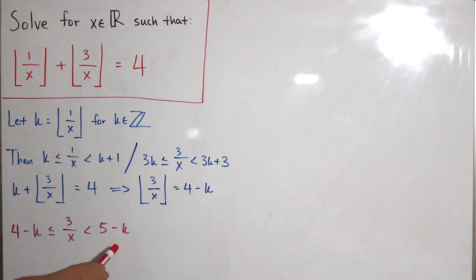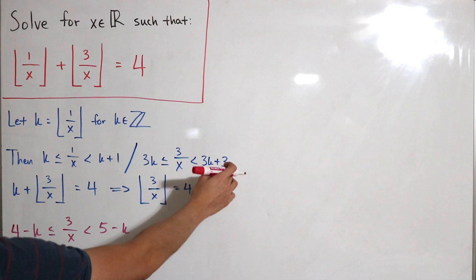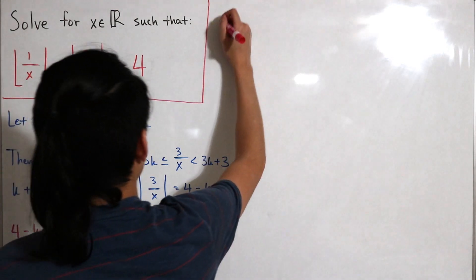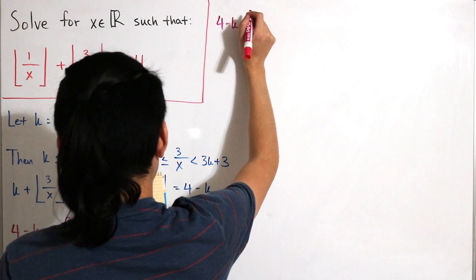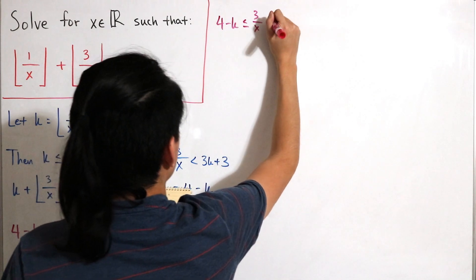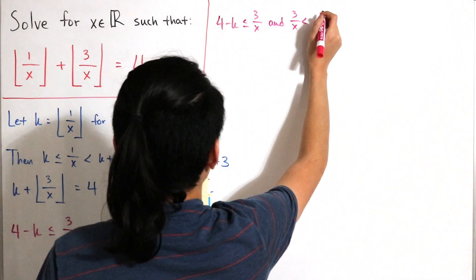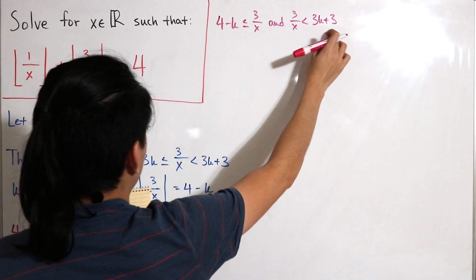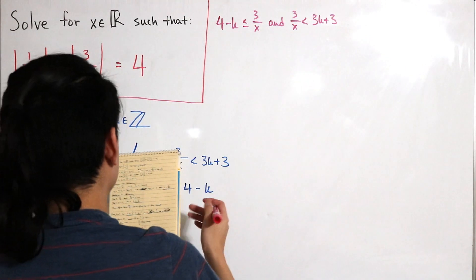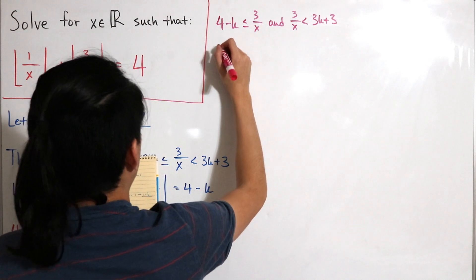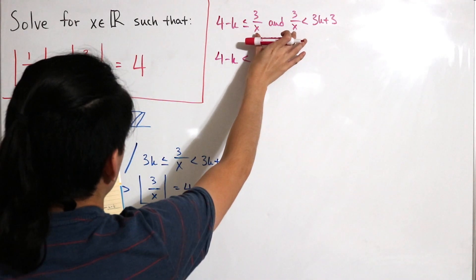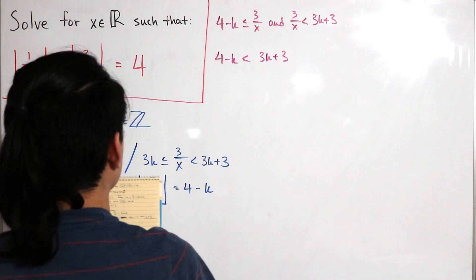Now we analyze the inequalities involving 3 over x. We have 4 minus k less than or equal to 3 over x, and 3 over x strictly less than 3k plus 3. Comparing the extreme left and right sides under the floor function definition gives us 4 minus k strictly less than 3k plus 3.